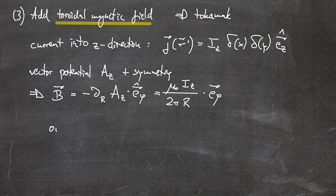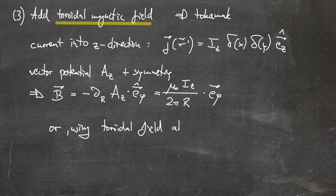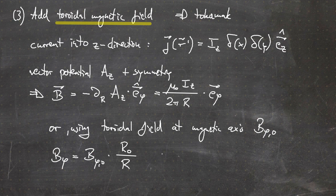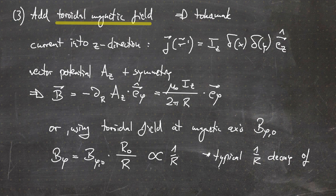The resulting magnetic field is: B equals minus the derivative in the r direction of A_z times e_phi, the unit vector in the phi direction, and that can be calculated as mu_naught times I_z over 2 pi R times e_phi. An often-used way to express this is using the toroidal field strength at the magnetic axis, called B_phi_naught, so that B_phi equals B_phi_naught times R_naught over R. As you can see, this is proportional to 1/R — that is the typical 1/R decay of the toroidal field which we see in tokamaks.